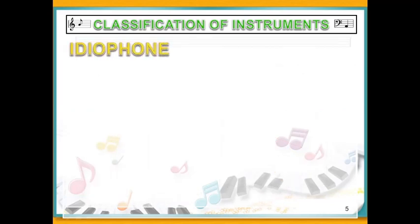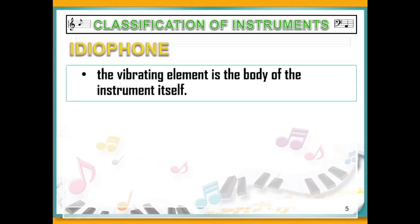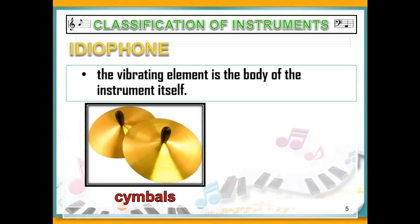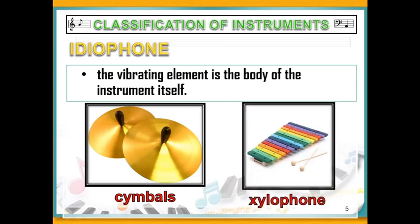Idiophone is another classification of instruments in which vibrations come from the instrument itself, like cymbals and xylophones. The sounds come from the body of the cymbals as well as the xylophones. Maracas is also an example of an Idiophone.